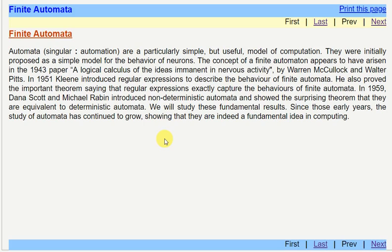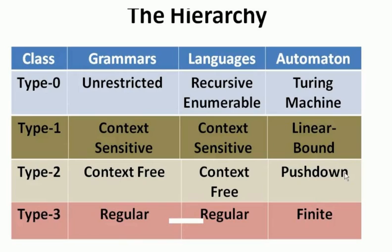Basically, an automata is a model of computation. This is the hierarchy of the model of computation. It has four classes: type 0, type 1, type 2, and type 3.